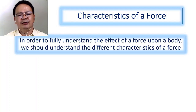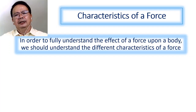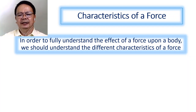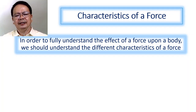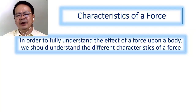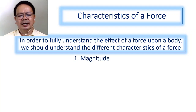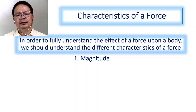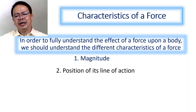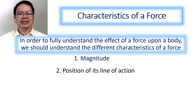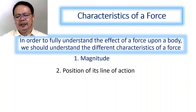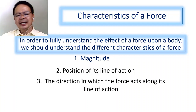How do we determine the effect of a force? In order for us to fully understand the effect of a force upon the body, we should understand the different characteristics of a force. These are: first, the magnitude — the force must have magnitude; second, we should know the position of its line of action; and third, we should know the direction in which the force acts along its line of action.